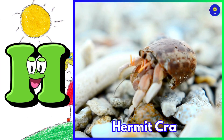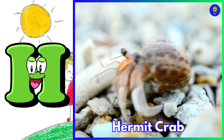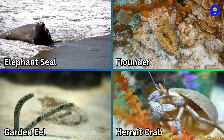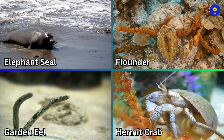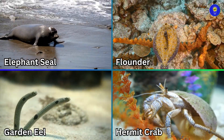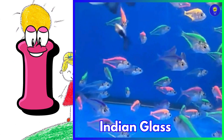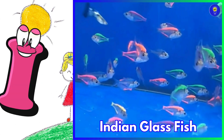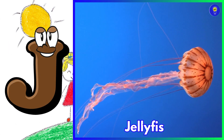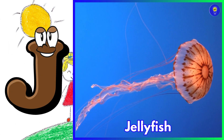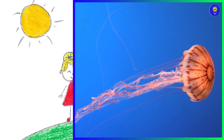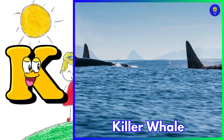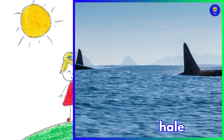H is for hermit crab. I is for Indian glass fish. J is for jellyfish. K is for killer whale.